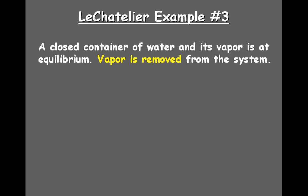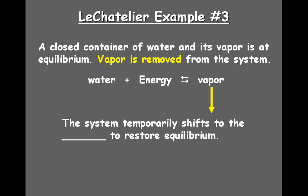Example three: you have a closed container of water and its vapor at equilibrium — water plus energy in equilibrium produces water vapor. You then remove vapor from the system. Because you're removing the vapor, you don't have as much vapor to react in the reverse reaction, so the forward reaction happens at a greater rate. Water plus energy produces more vapor, so the system temporarily shifts to the right. At some point equilibrium would then be restored.